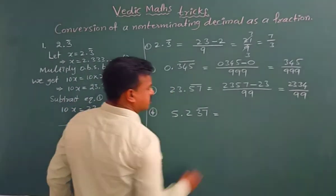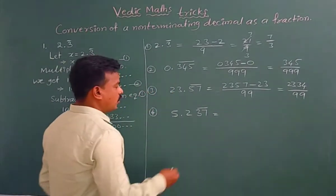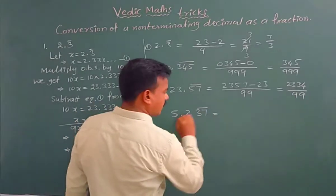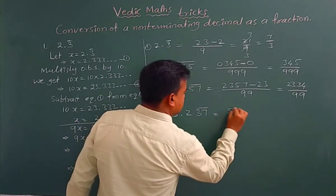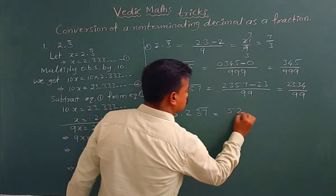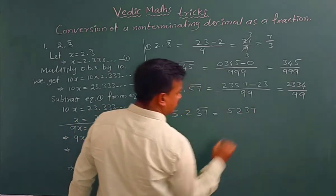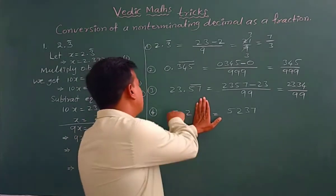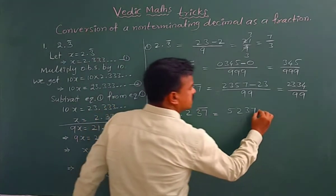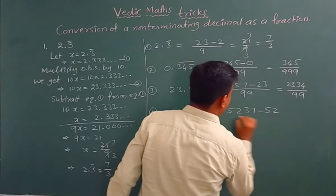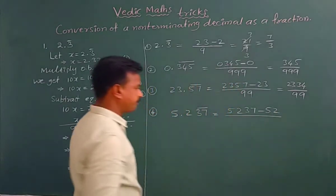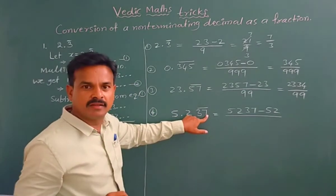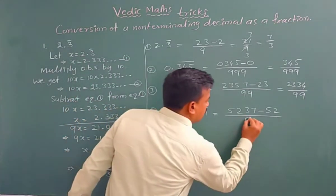Now here also same, this point and bar you remove. The remaining digits you write, 5 2 3 7. And without the bar what are the digits there? 5 2, that means minus 5 2, you write. Divided by, under the bar 2 digits are there, so 2 nines you write.